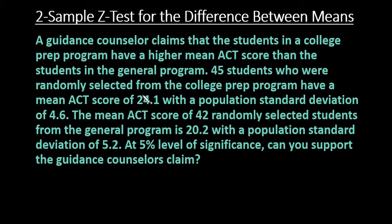What we have here is a guidance counselor claims that the students in a college prep program have a higher mean ACT score than the students in the general program. 45 students randomly selected from the college prep program have a mean ACT score of 24.1 with a population standard deviation of 4.6. The mean ACT score of 42 randomly selected students from the general program is 20.2 with a population standard deviation of 5.2. At the 5% level of significance, can you support the guidance counselor's claim?